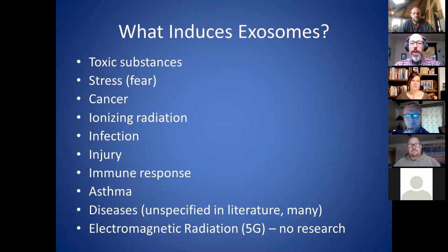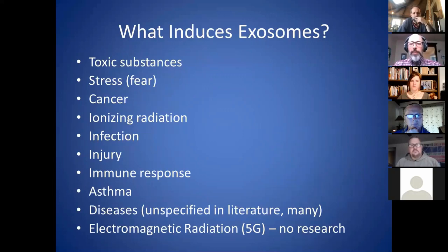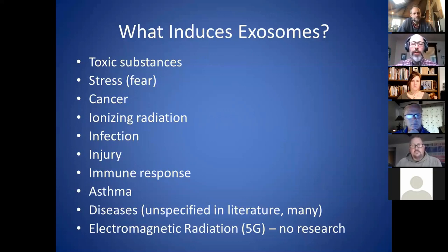So what causes us to make more exosomes and release them into circulation? It turns out that almost every type of insult to the body causes this process to occur. Toxic substances — several papers looked at environmental toxins such as heavy metals like arsenic and organic chemical toxins. There's also evidence about bacterial toxins. So exosomes clearly have a role in communication or possibly the removal of toxic substances that damage our cells. Interestingly, psychological stress — including fear, which many people around the world are experiencing intensely right now — also causes release of exosomes.